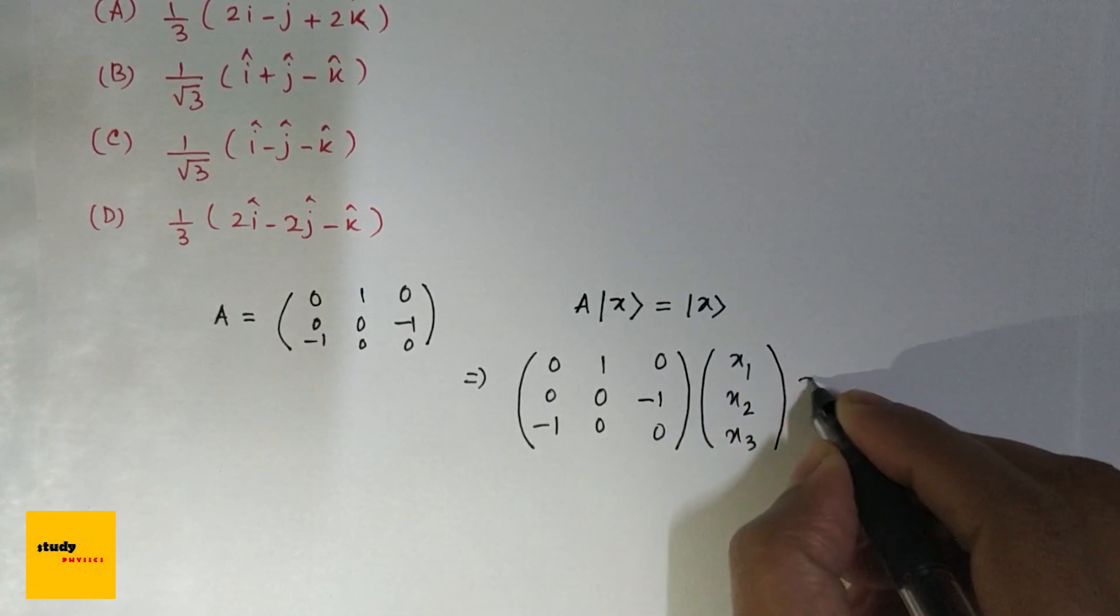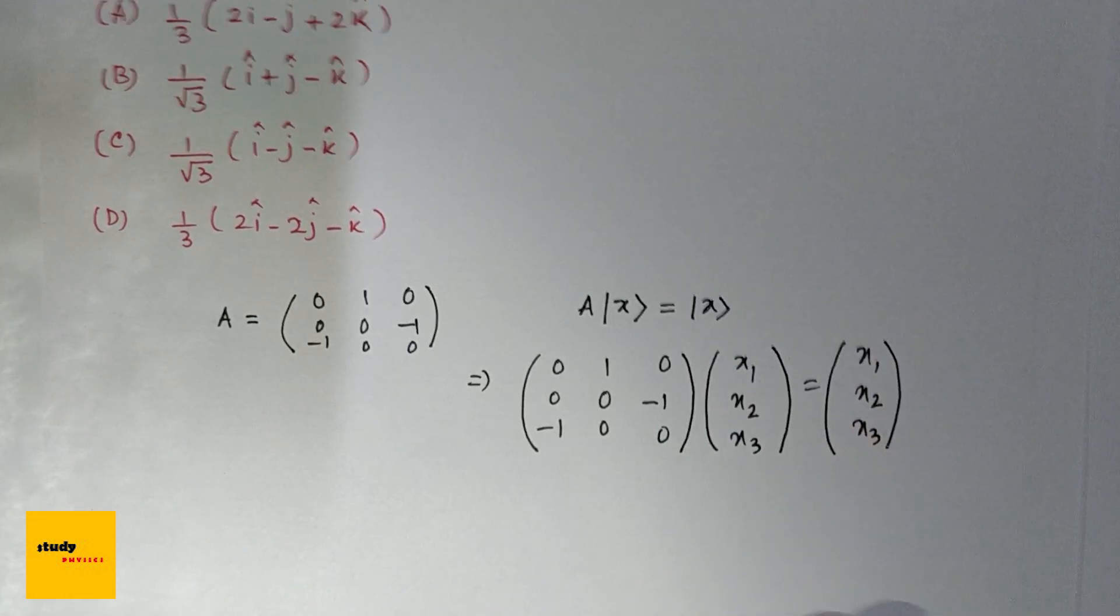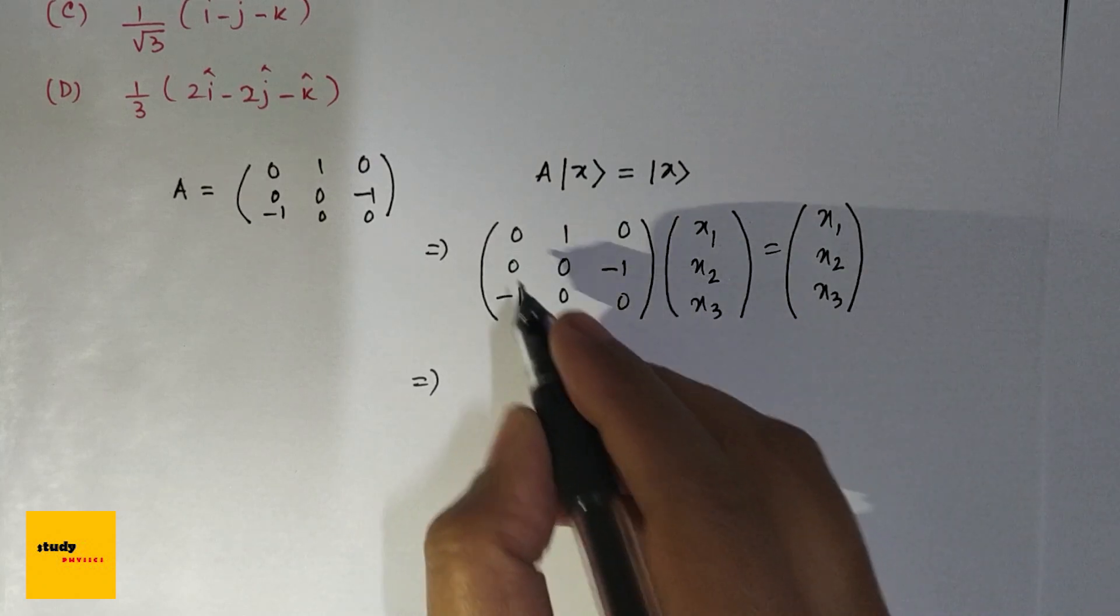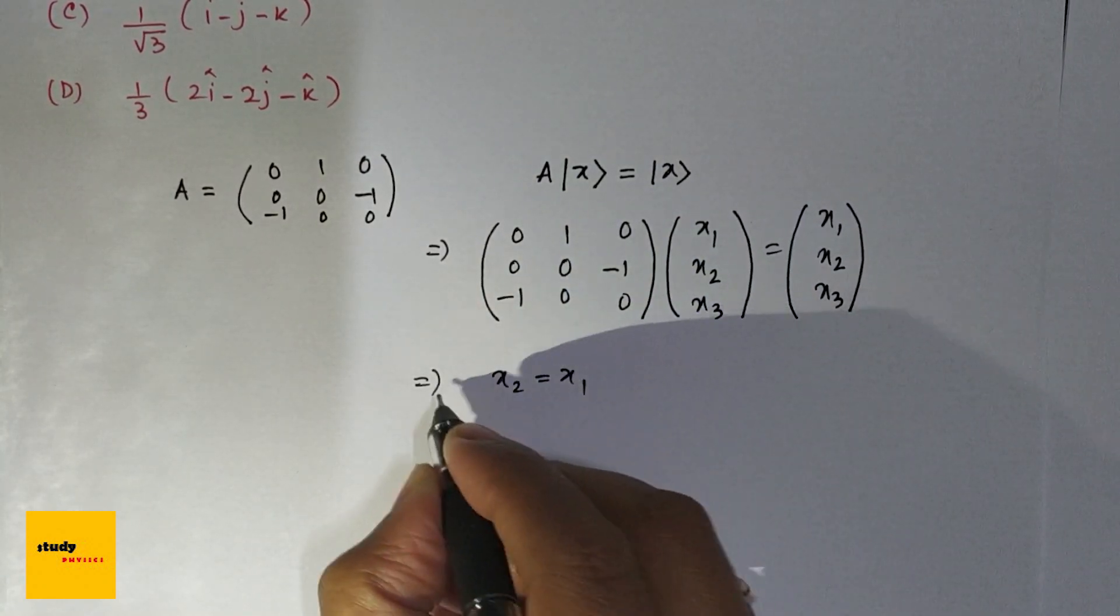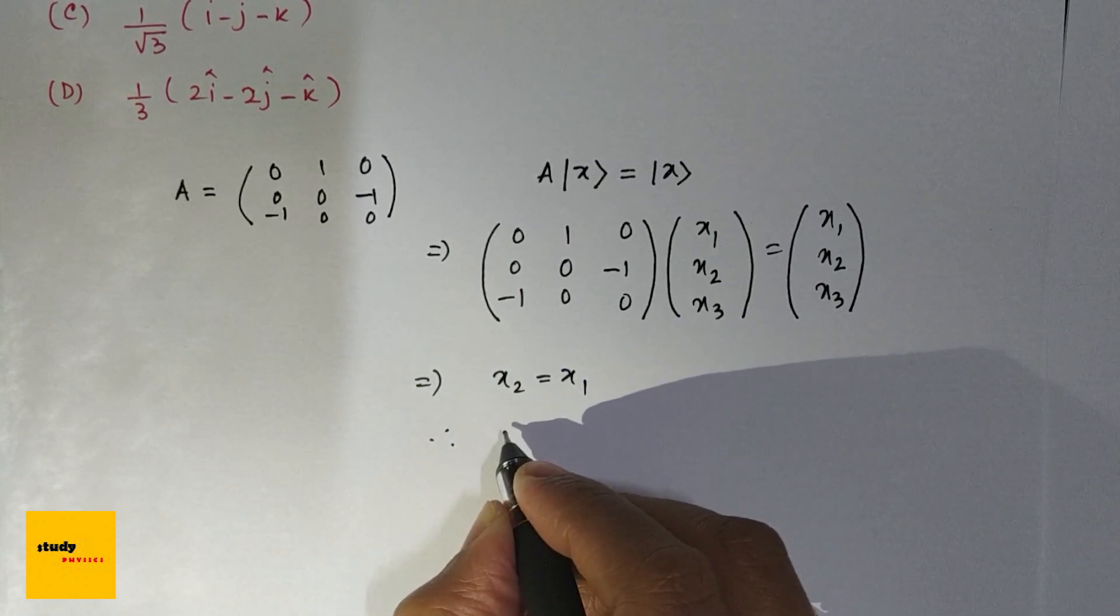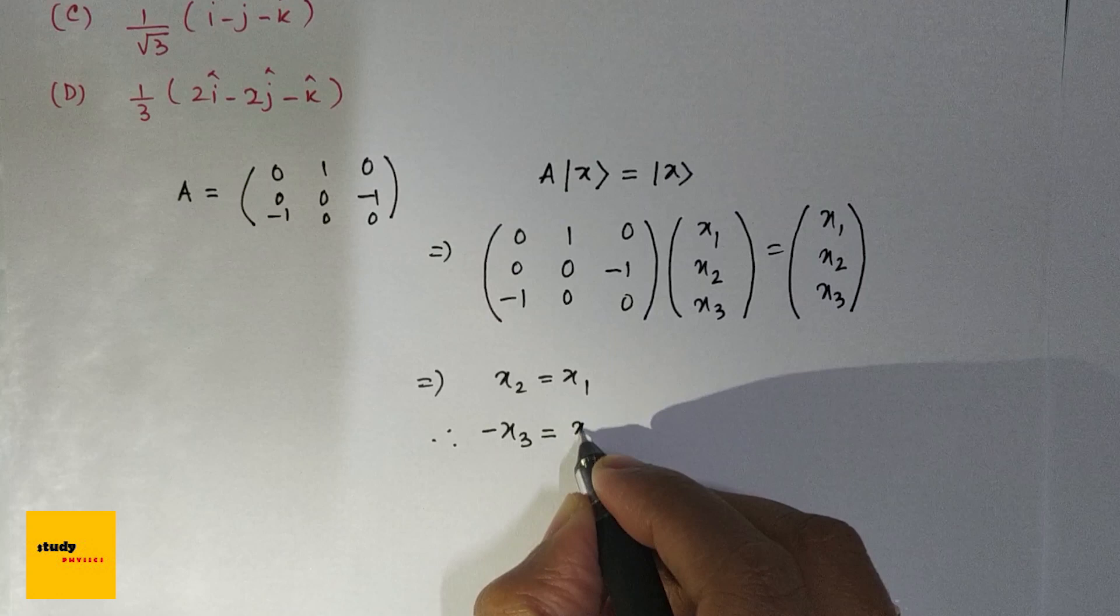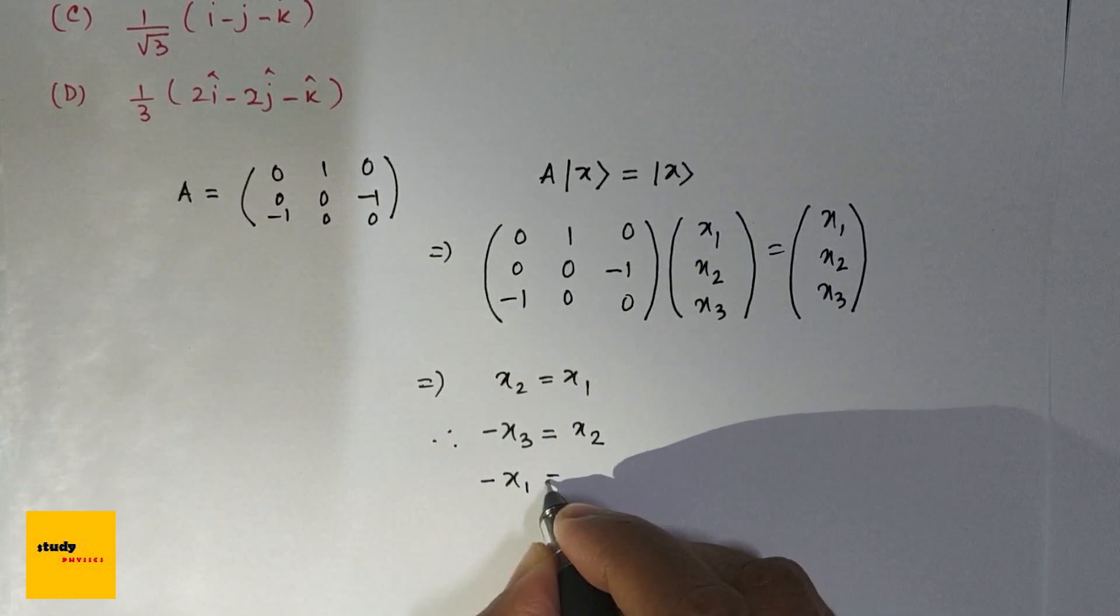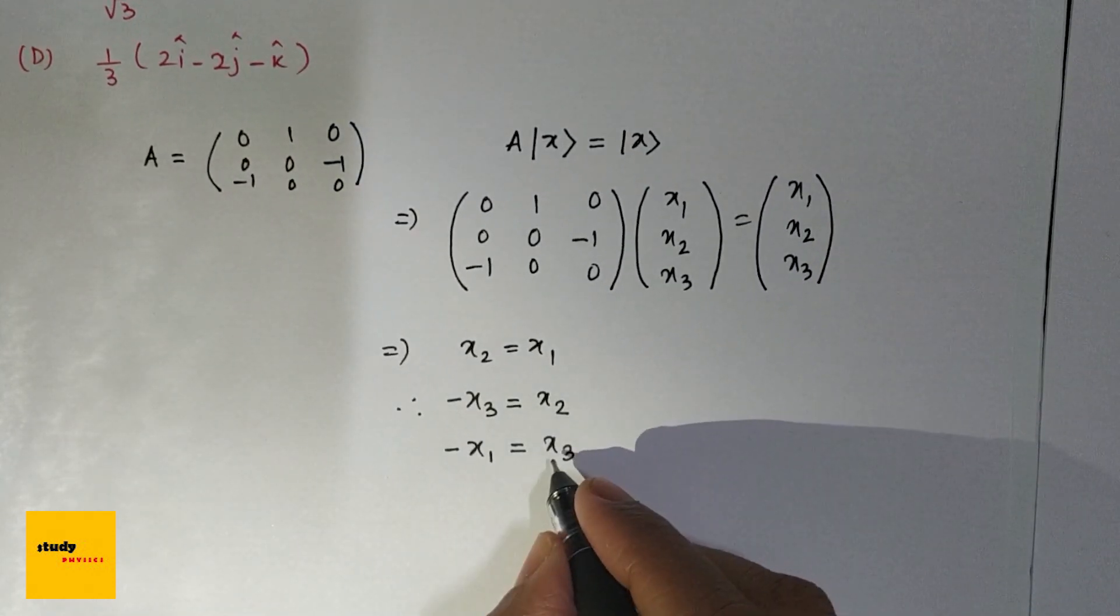equals (x₁, x₂, x₃). Now doing matrix multiplication, we can write x₂ equals x₁, minus x₃ equals x₂, and minus x₁ equals x₃. So x₃ is...